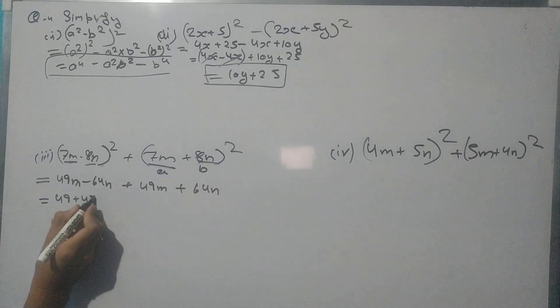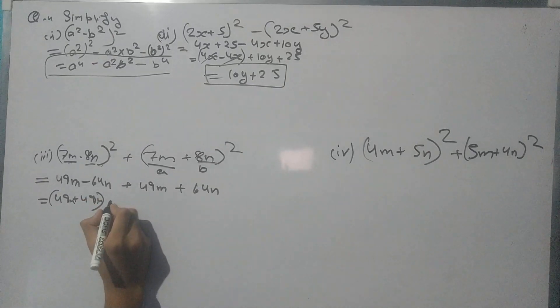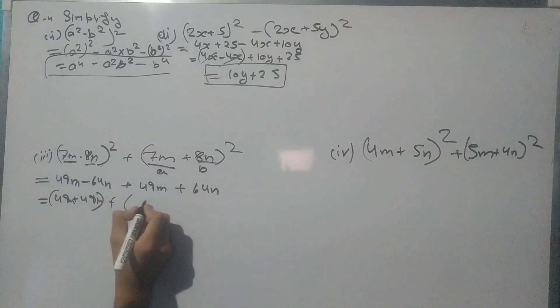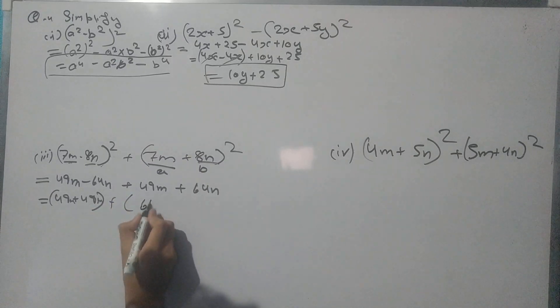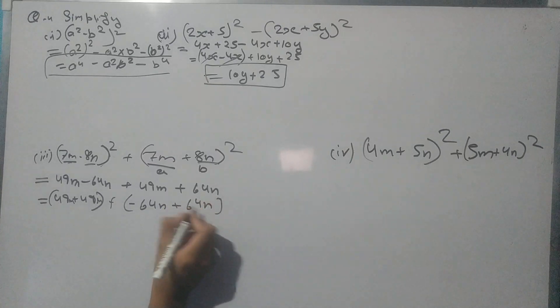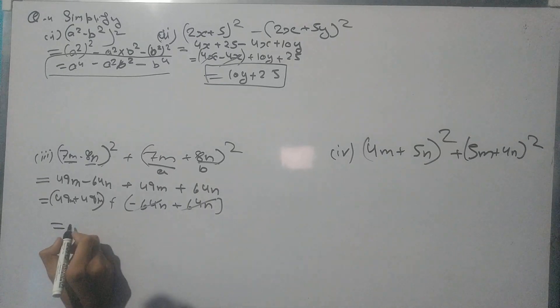Let's categorize: 49 plus 49m² plus 64n². So this will be cancelled out and if you add this 49 + 49, you get 98m².